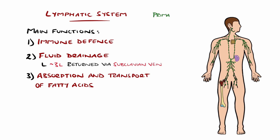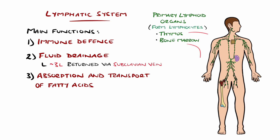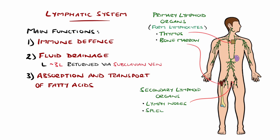The lymphatic system is composed of primary lymphoid organs where lymphocytes are formed, such as the bone marrow and thymus, and secondary lymphoid organs, including lymph nodes throughout the body, particularly in the head, armpits, groin, chest, and abdomen, connected by small lymphatic vessels, as well as the spleen and mucosa-associated lymphoid tissue, or MALT.